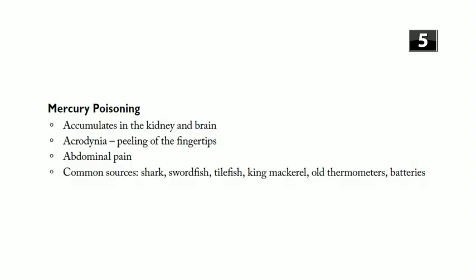Common sources of mercury include large fish: shark, swordfish, tilefish, and king mackerel. The FDA recommends pregnant women avoid these fish due to risk of fetal brain damage. On a test, a patient who eats exotic fish or swordfish and develops enlarged kidneys or neurological symptoms — think mercury poisoning. Organic mercury from living organisms is much more problematic than inorganic mercury from broken thermometers.